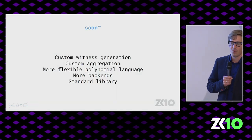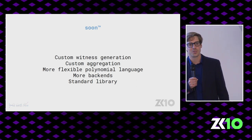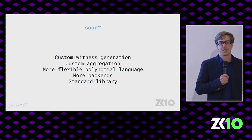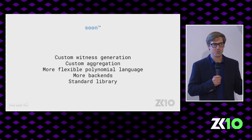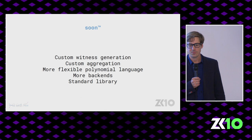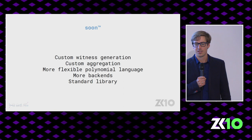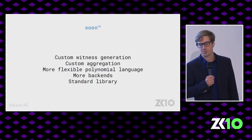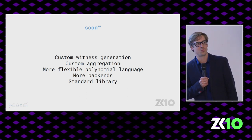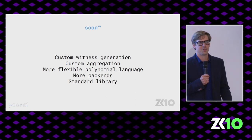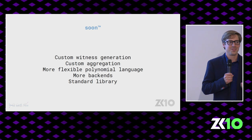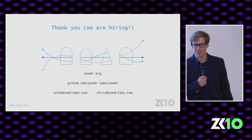Plans for the future: our automated witness generation is quite slow, which is expected because it has to solve constraints. We want to allow external witness generators so you can just run a program that provides the witnesses. We want to support aggregation — taking chunks of VM execution and generating proofs for that. We want to further extend the polynomial constraint language, add a proper type system, and add more backends. We also want to work towards a standard library so that when you need a hash function you don't have to rewrite it yourself — one person writes it once and we share the code.